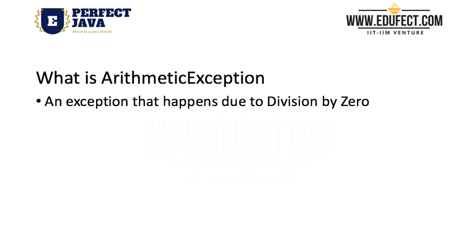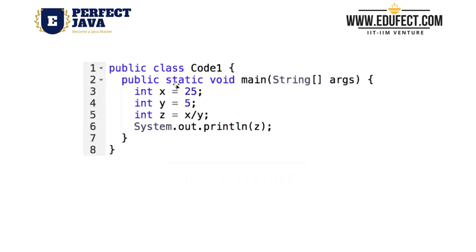Let us look at an example. Here we have a piece of code. It is a class Code1, and in its main method, we have: int x is equal to 25, int y is equal to 5, int z is equal to x divided by y. So what is the value of z? It will be 25 divided by 5, which is 5, and then we have System.out.println(z). So the value 5 would be printed on the screen. This is a perfect code — when we run it, the output would be 5.